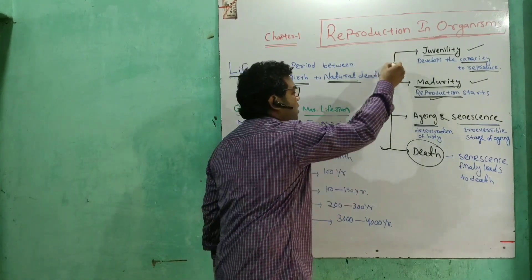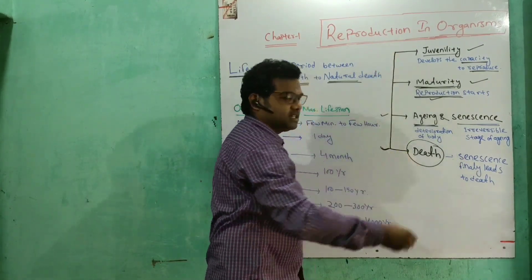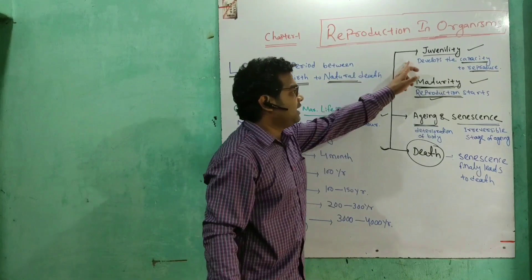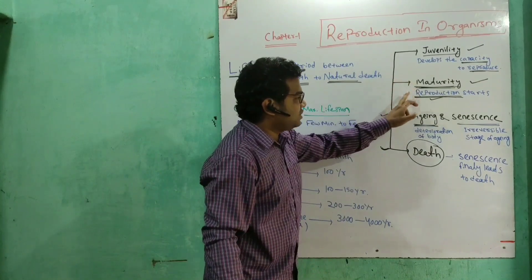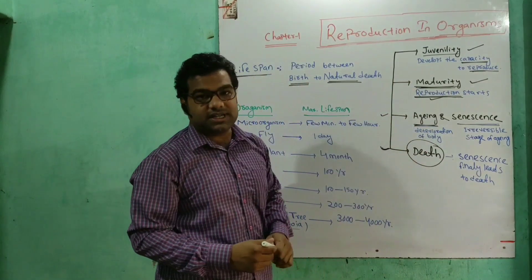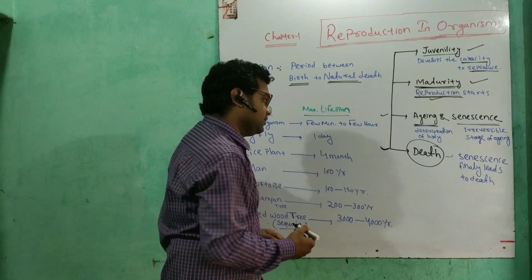So we have four different stages of lifespan: juvenility, maturity, aging and senescence, and the last one is death.